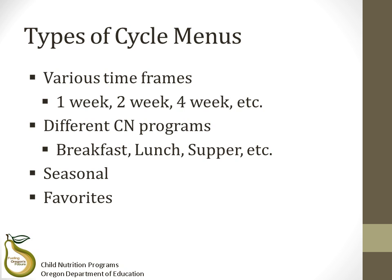Cycle menus do not have to fit into a specific mold — they can vary based on time frame. Maybe a one-week, two-week, or four-week cycle works best for your operation. Cycle menus vary based on the child nutrition program you are operating, as well as meal type. For instance, your program may decide to have a one-week breakfast cycle menu but a four-week lunch cycle menu. Seasonality can affect the type of cycle menu you might use — maybe you are creating cycle menus for fall, winter, and spring, since incorporating seasonal menu items can impact freshness, quality, and price. You can also create a cycle menu that incorporates several different cycles with varying lengths and complexity based on meal type or meal component, such as having the same weekly cycle of signature entrée favorites alongside a four-week cycle of secondary entrées, fruits, and vegetables.